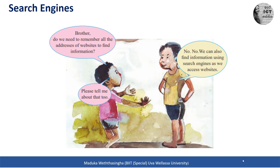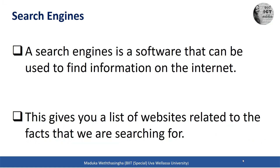A search engine is software that we can use to find information on the internet. This software gives you a list of websites related to the topic you are searching for. When you search about a topic, it gives a number of hyperlinks to websites related to that topic. When you search for something, the search engine gives a list of hyperlinks related to your search.